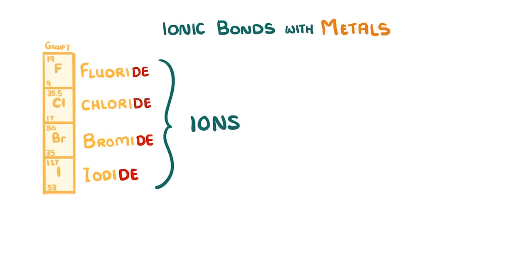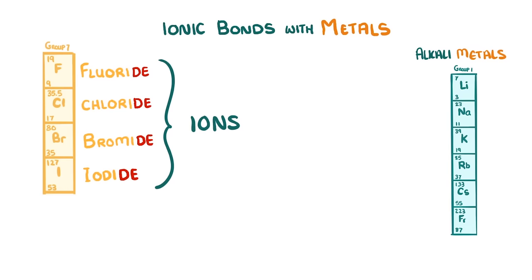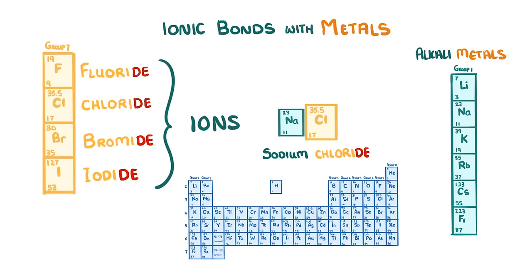You will probably most often see halogens forming ionic compounds with the alkali metals in Group 1, like sodium chloride as we have here, but they can form ionic bonds with metals of other groups too.